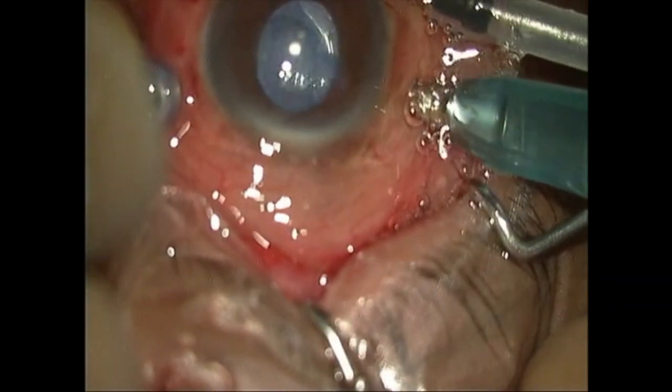This is followed by fluid air exchange with initial removal of the peripheral fluid from the retinotomy margins followed by removal of perfluorocarbon liquid. 5,000 centistokes silicone oil is then injected as a long term tamponade. Complete fill is ensured and the case is closed.